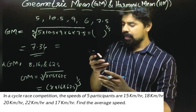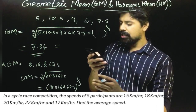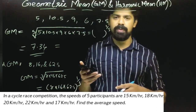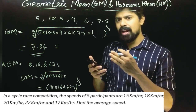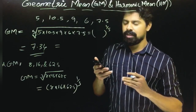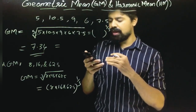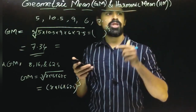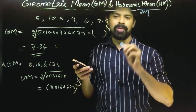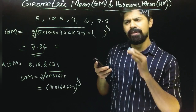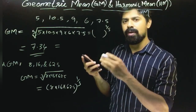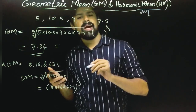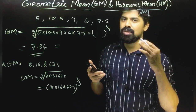In a Cycle Race Competition, the speeds of five participants are 15 km/h, 18 km/h, 20 km/h, 22 km/h, and 17 km/h. Find the average speed. When the question asks for the average speed, we use the harmonic mean. Harmonic mean represents the average speed — whether for cycles, aircraft, or any vehicle speed.